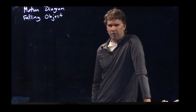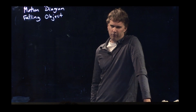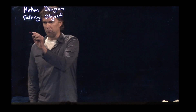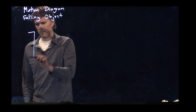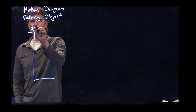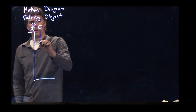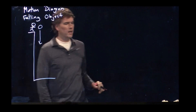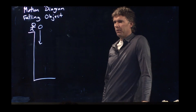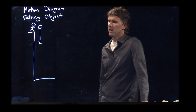Hello class, Professor Anderson here. Let's try the motion diagram for a falling object. Let's say you stand on top of a building and you drop a ball, and let's see if we can figure out what the motion diagram is going to look like for that ball. Okay?